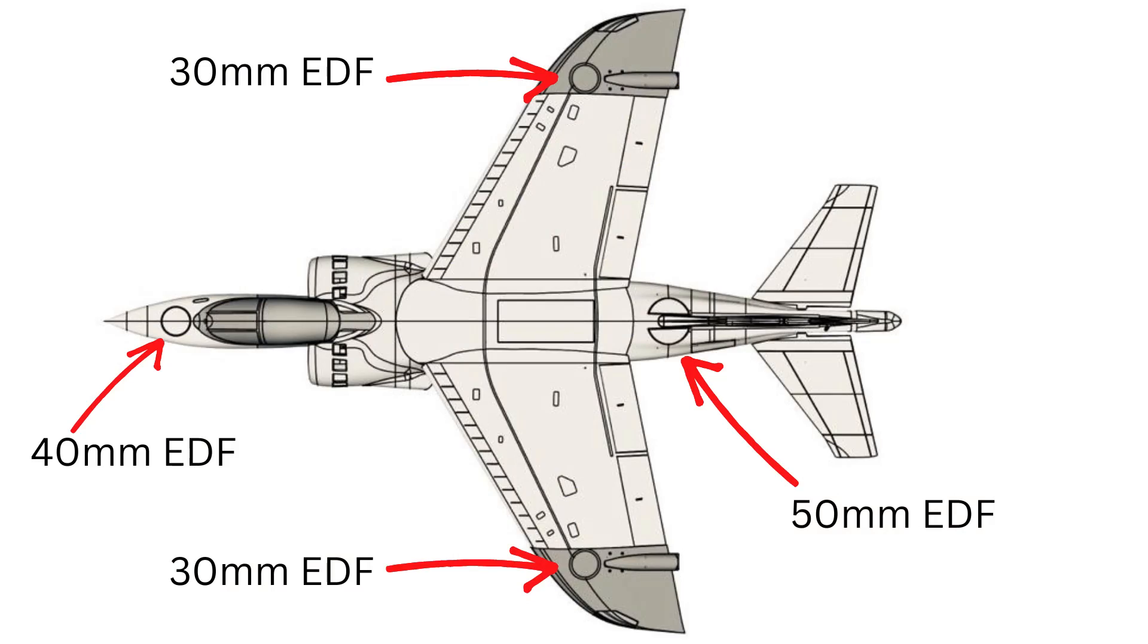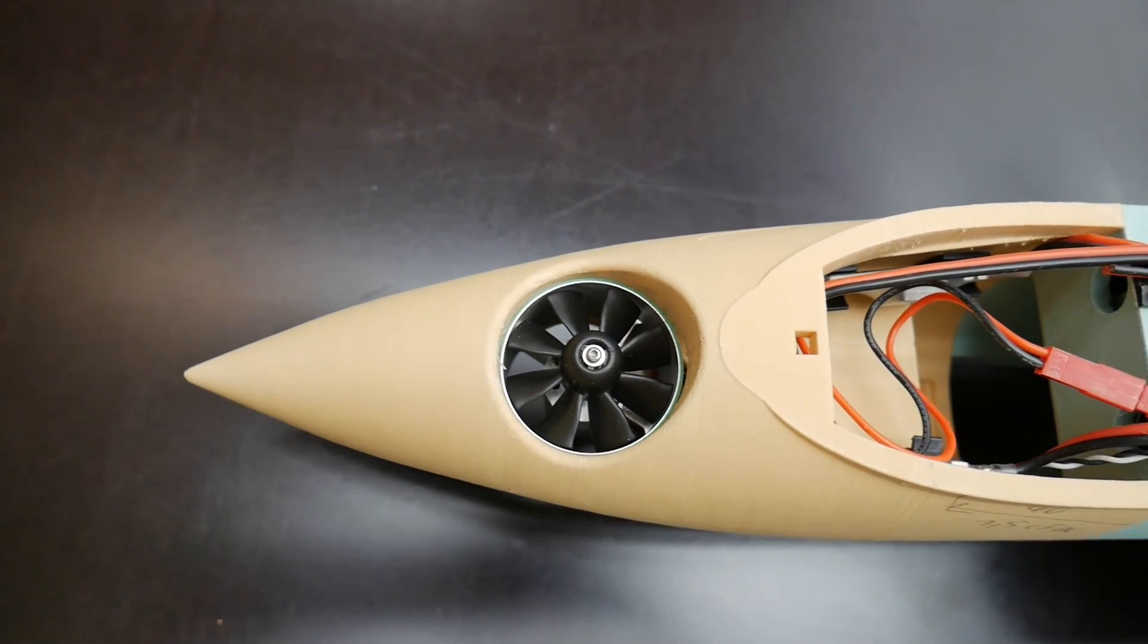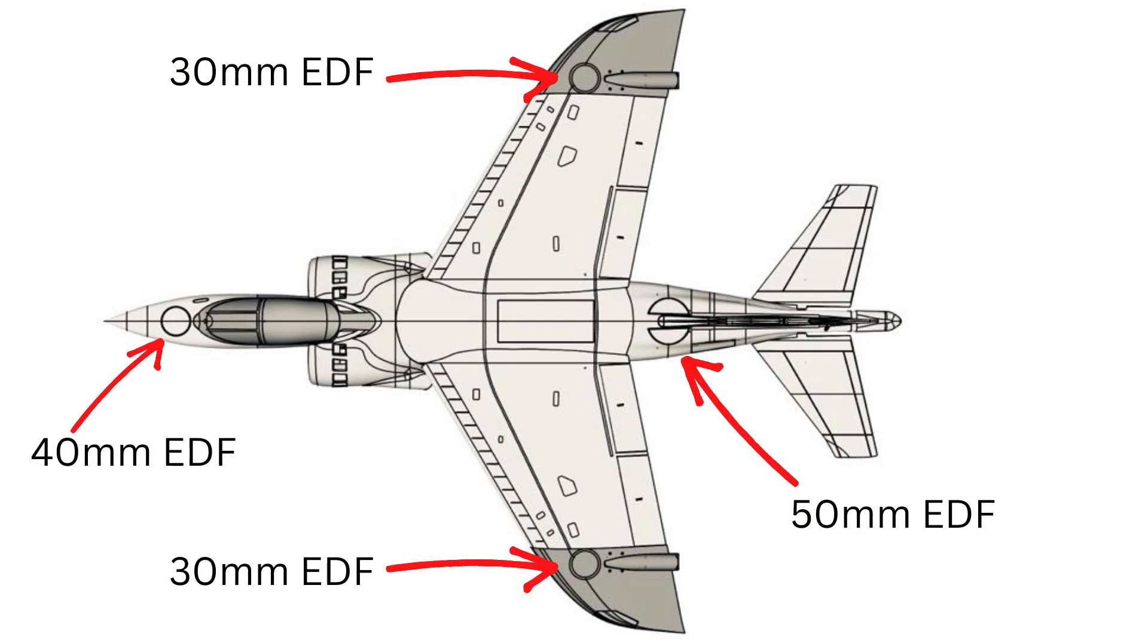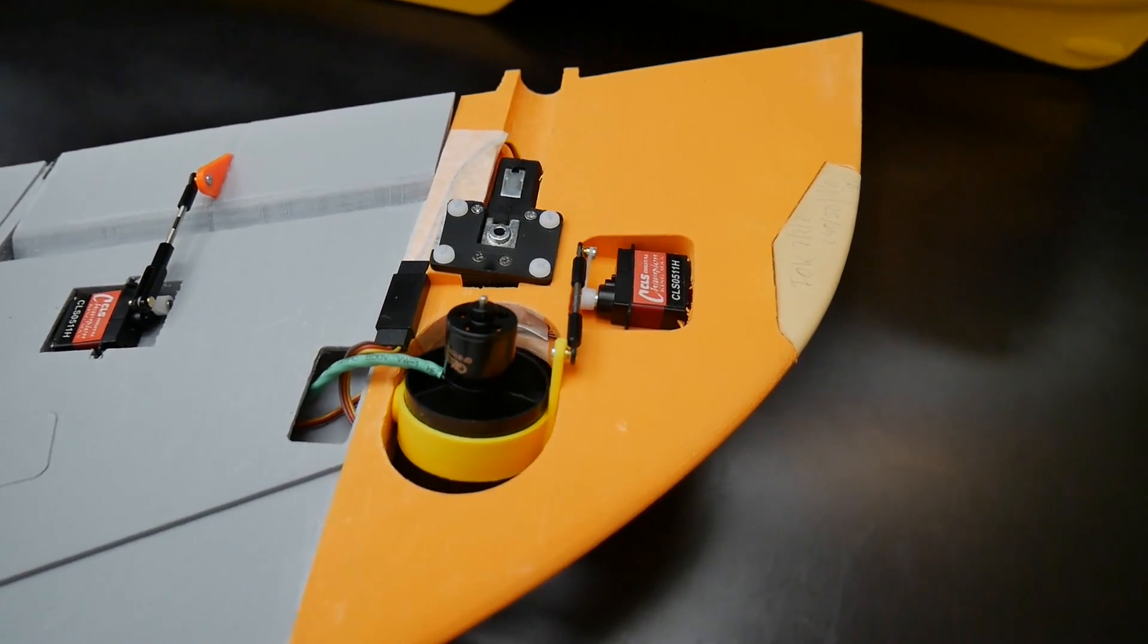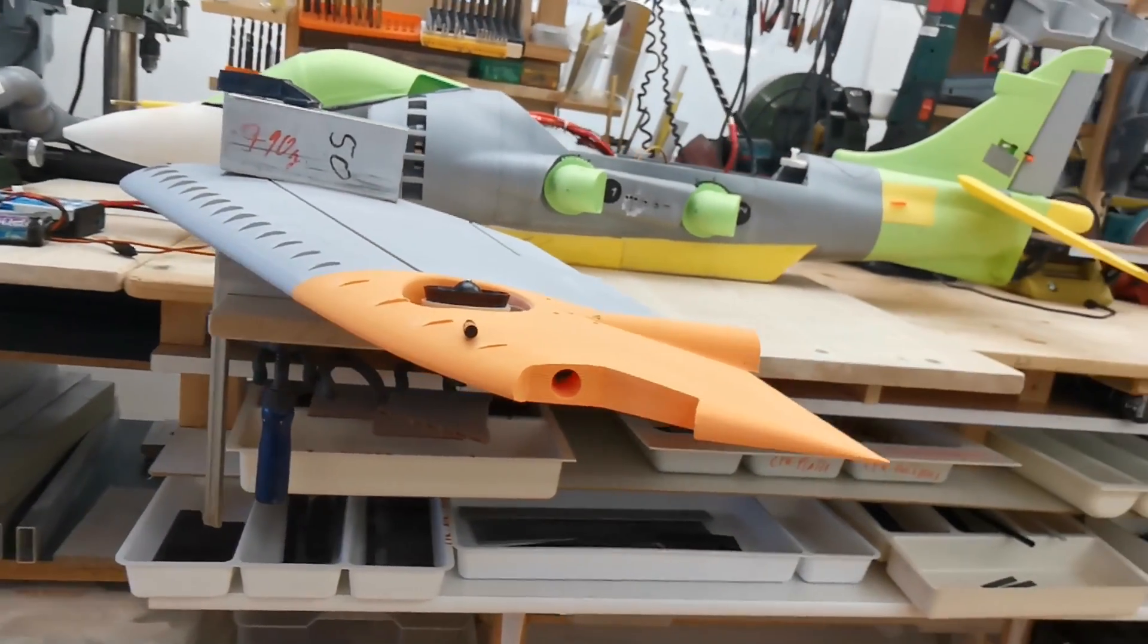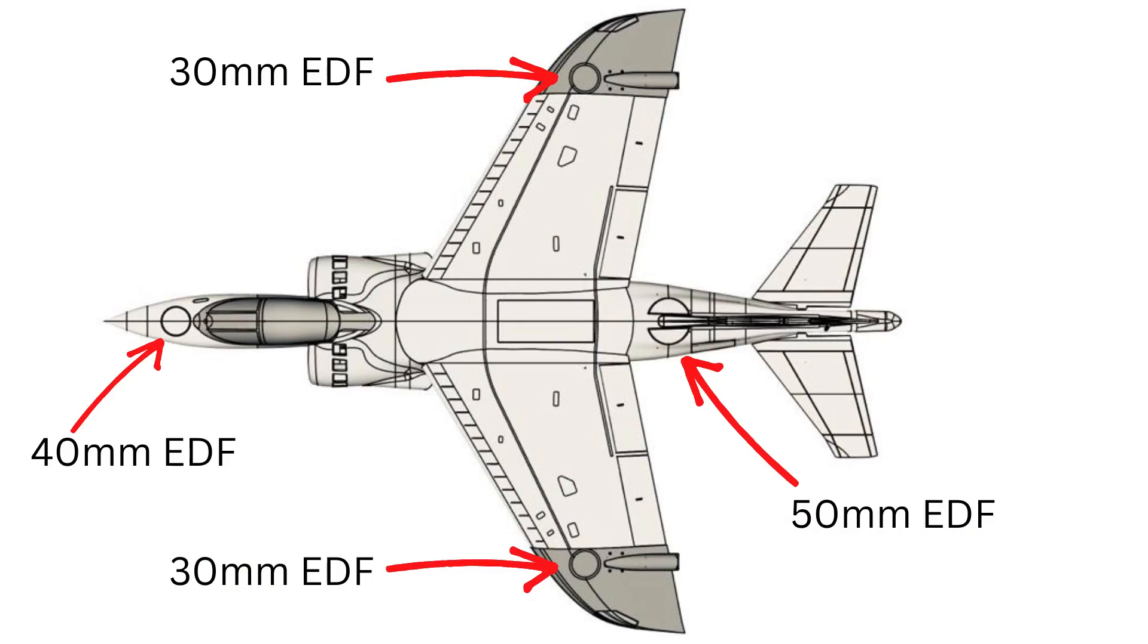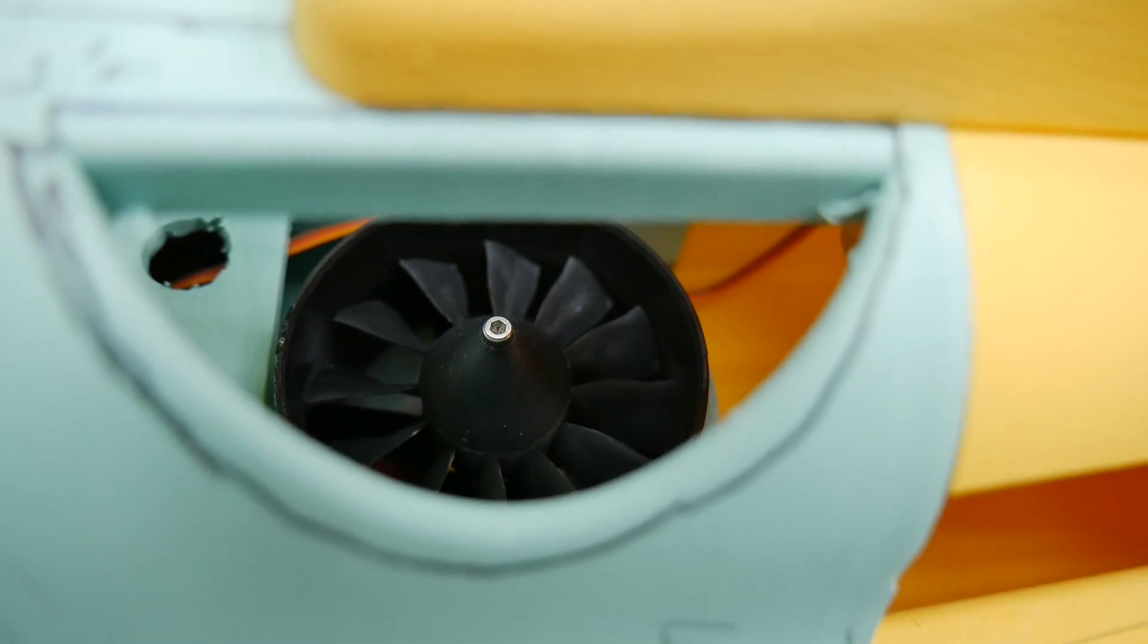And this is how our leveling system looks like. We got a 40mm EDF in the front and 30mm EDFs each side on the wings. And the system is completed by a 50mm EDF in the rear fuselage compartment.